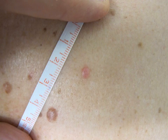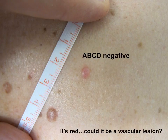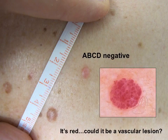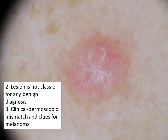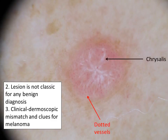Here it is clinically. It's ABCD negative. It could be a vascular lesion, but then I would expect it to display the dermoscopic pattern for angioma. However, under dermoscopy this lesion was not classic for any benign diagnosis. There was a clinical-dermoscopic mismatch from what I expected, and there are clues for melanoma: chrysalis structures and dotted vessels.